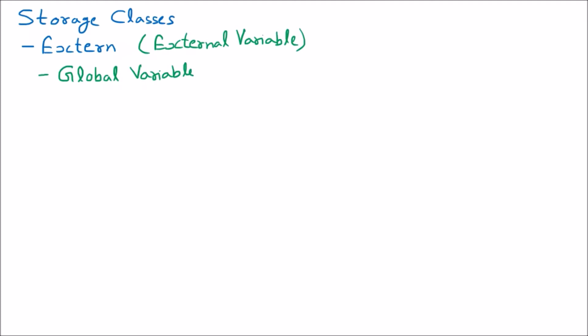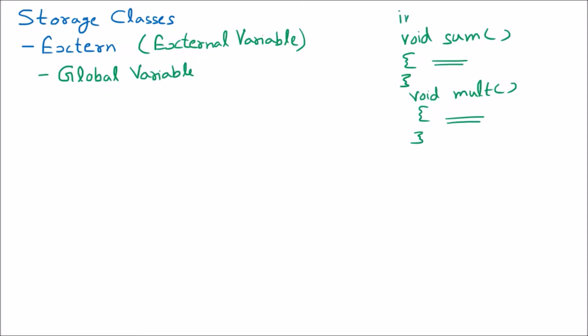Suppose we have a function void sum and one more function void mult. If we declare any variable on the top, like int a, that variable is the global variable and we call it the external variable, because this int a is accessible inside sum as well as inside mult. Any variable declared on top of the functions is called the external variable or global variable — this is the external storage class.